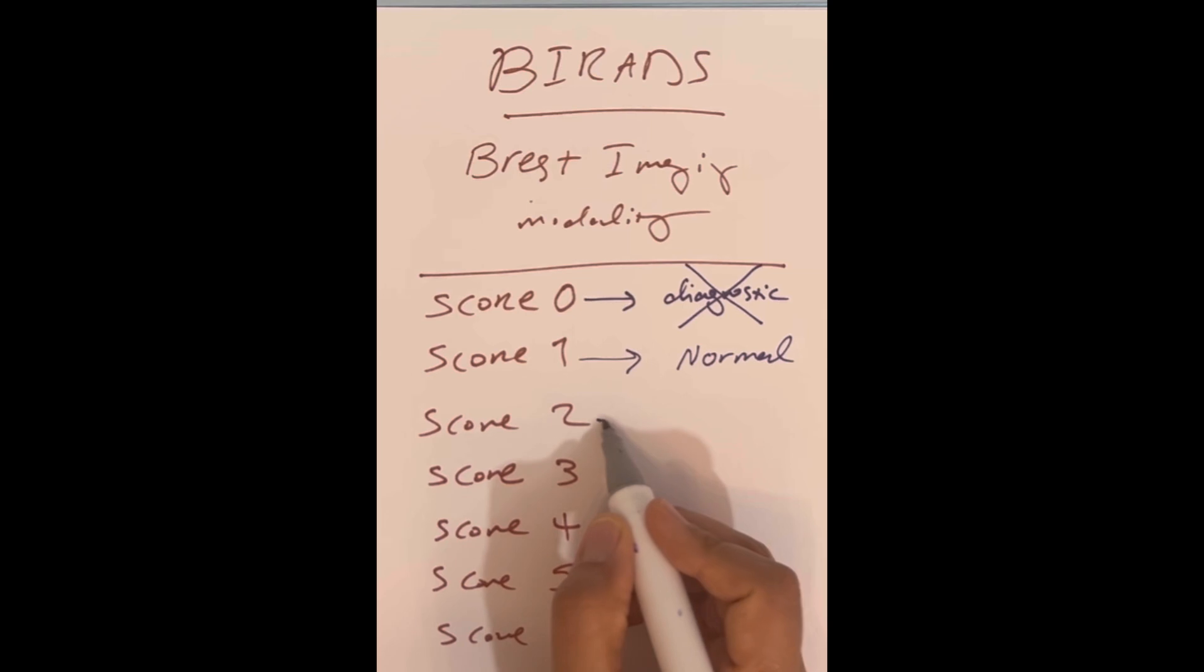Score 2 means there are some findings in your breast, for example some cysts, fibromas, or fibroadenomas, but all of them are benign. So don't worry—Score 2 means benign.